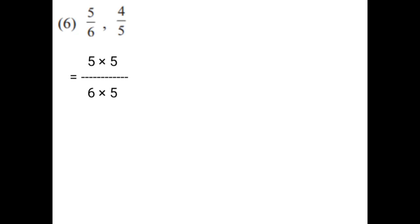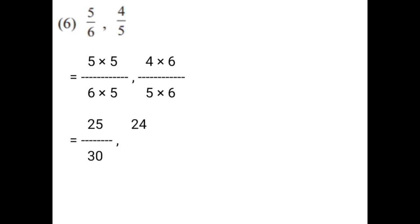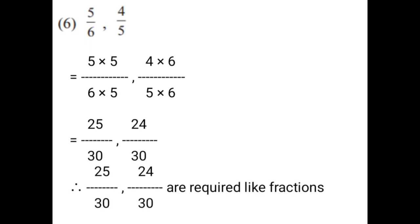5 upon 6, 4 upon 5. We have to take opposite denominators to multiply on numerator and denominator of both the fractions. That is equal to 5 upon 6 multiplied by 5 on numerator and 5 on denominator. 4 upon 5 multiplied by 6 on numerator and 6 on denominator. That is equal to 5 × 5 = 25 upon 6 × 5 = 30. Therefore, 25 upon 30 and 24 upon 30 are the required like fractions.